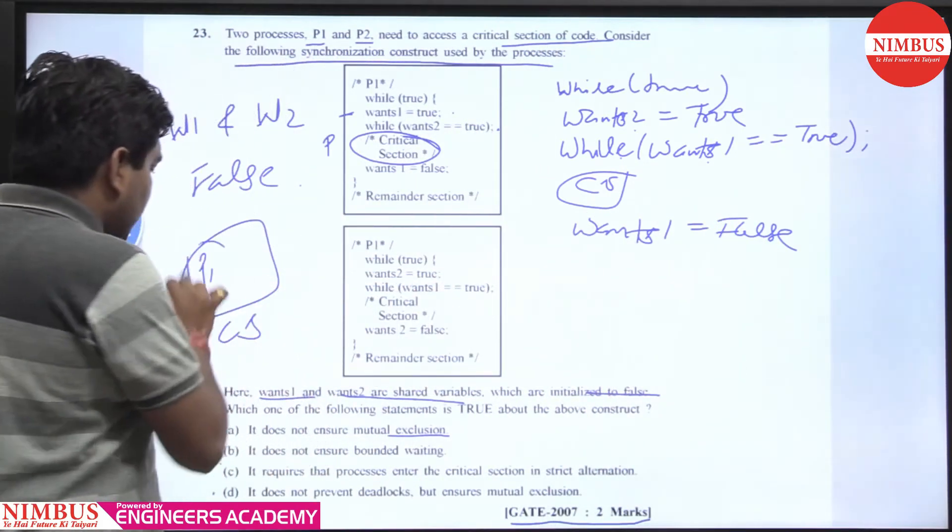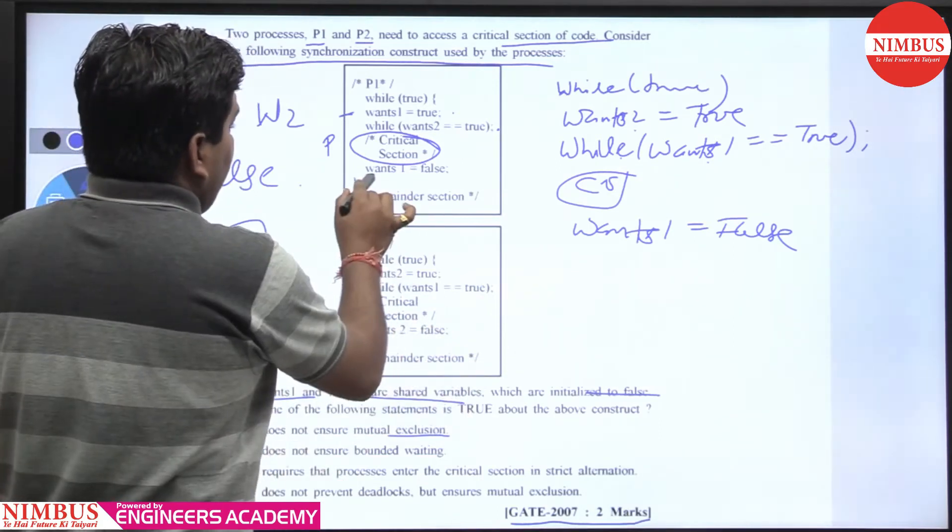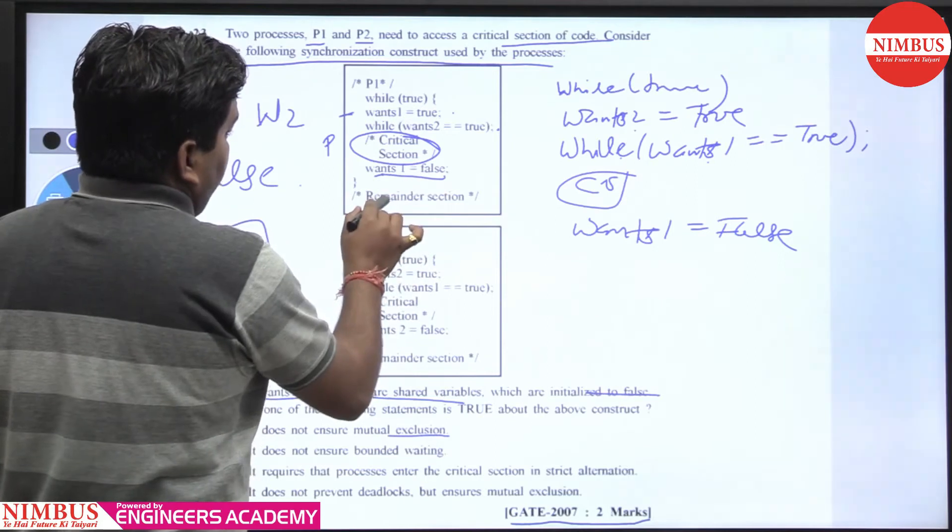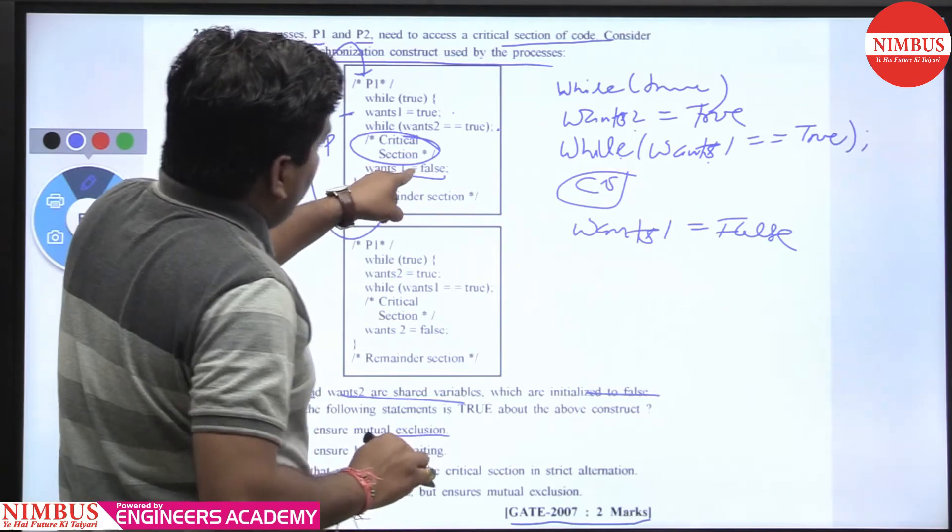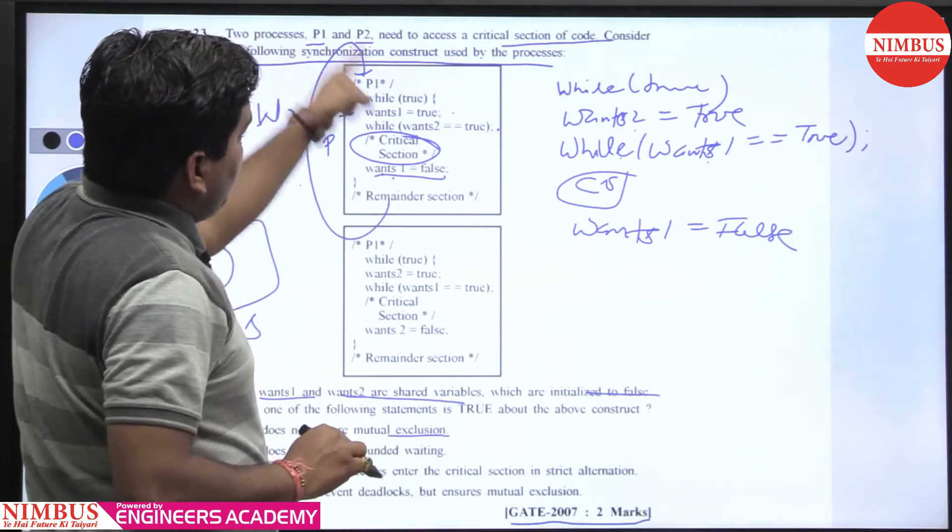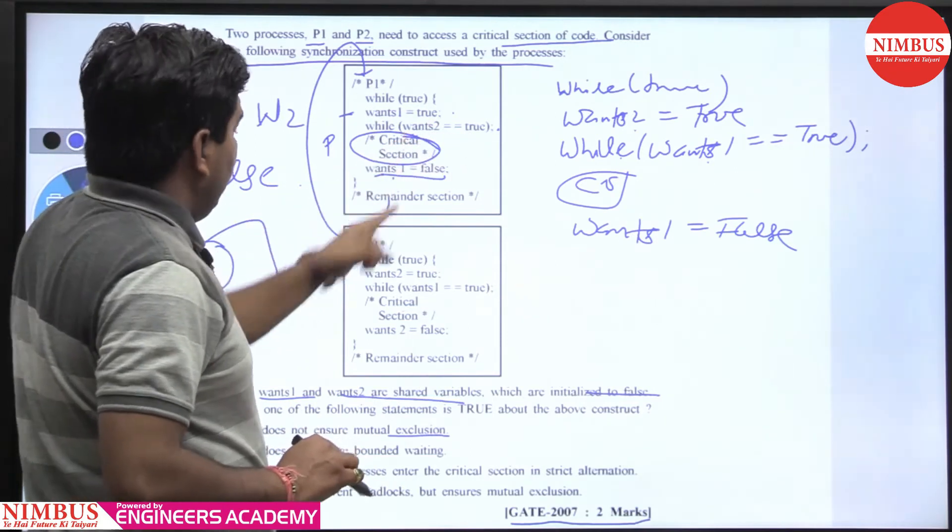So P1 in CS, then P2 not enter into the CS. Then when P1 comes out, what will happen, you have to check progress, whether you are getting it or not. When you come out, wants1 equal to false, then again you come wants1 true and wants2 equal to right now false, so it again in the CS.